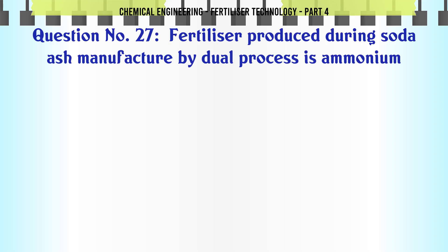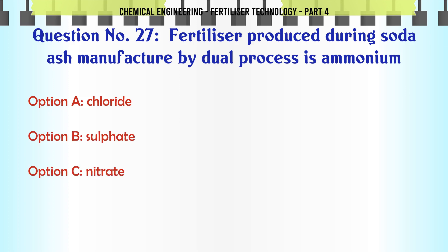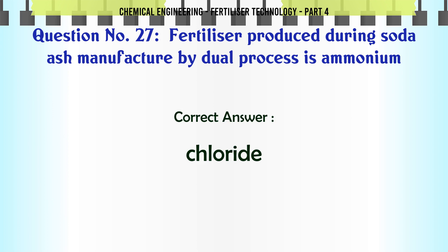Fertilizer produced during soda ash manufacture by dual process is ammonium: a. chloride, b. sulfate, c. nitrate, d. none of these. The correct answer is: chloride.